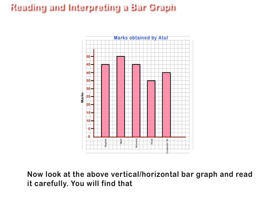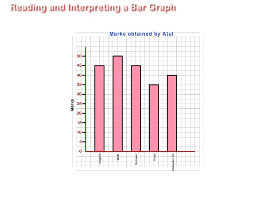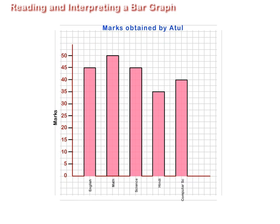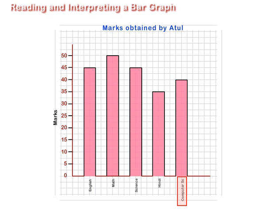Now look at the vertical or horizontal bar graph and read it carefully. You will find that: A. The bar graph represents the marks obtained by Atul in English, Maths, Science, Hindi, and Computer Science.